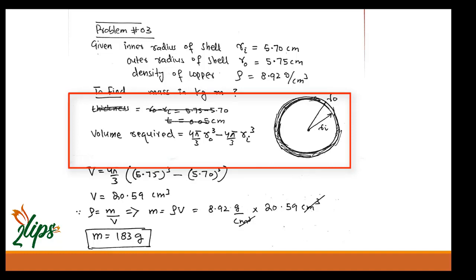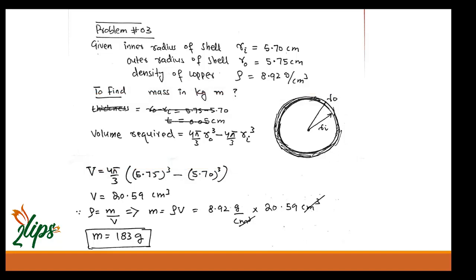The simple way to find the shell volume is to find the volume of the larger sphere of radius r₀ and subtract the volume of the smaller sphere of radius rᵢ. Taking (4/3)π as common, we get (4/3)π(r₀³ − rᵢ³). Putting the values of r₀ and rᵢ, I get 20.59 centimeter cubed.